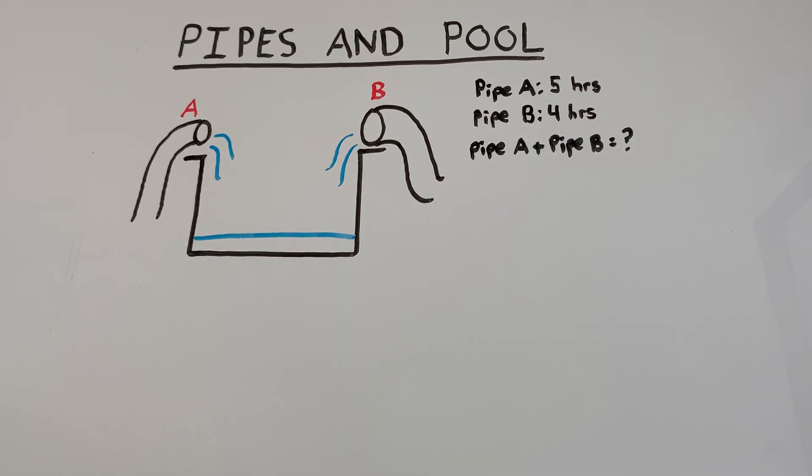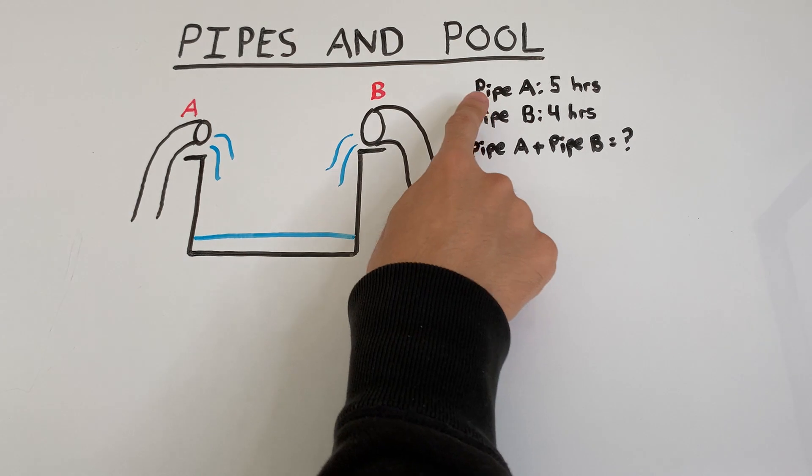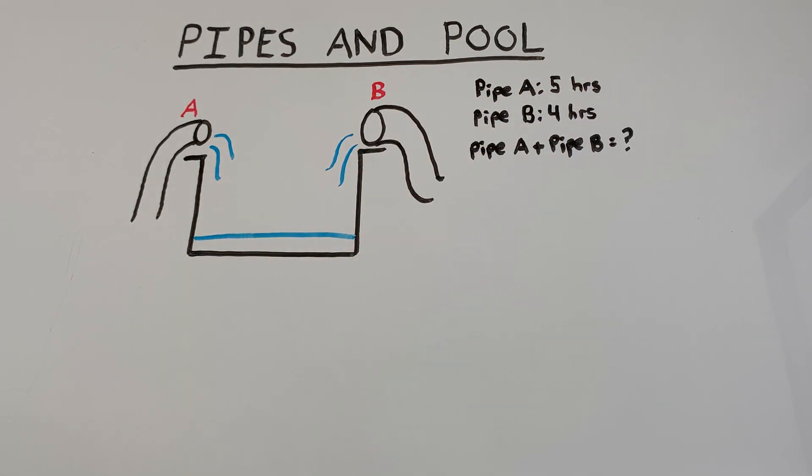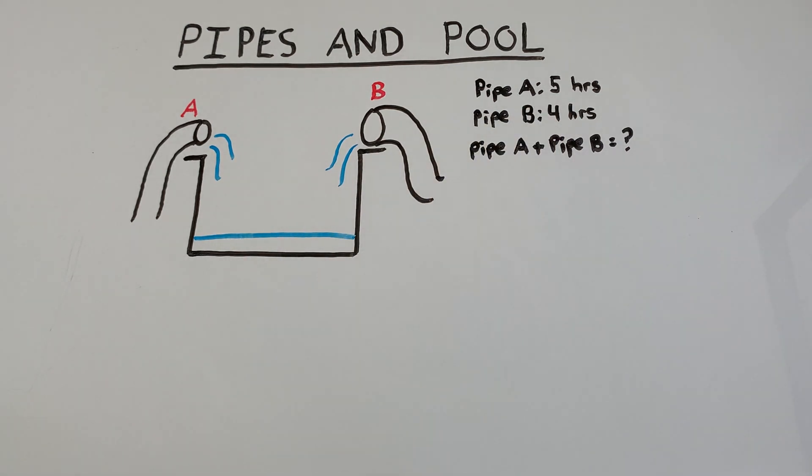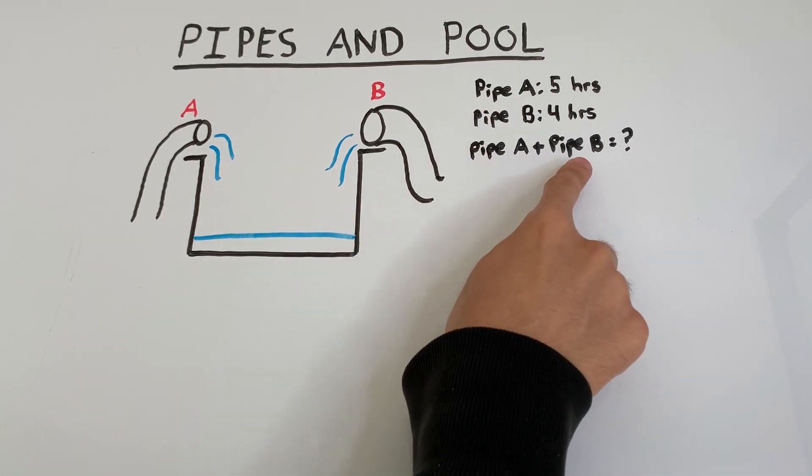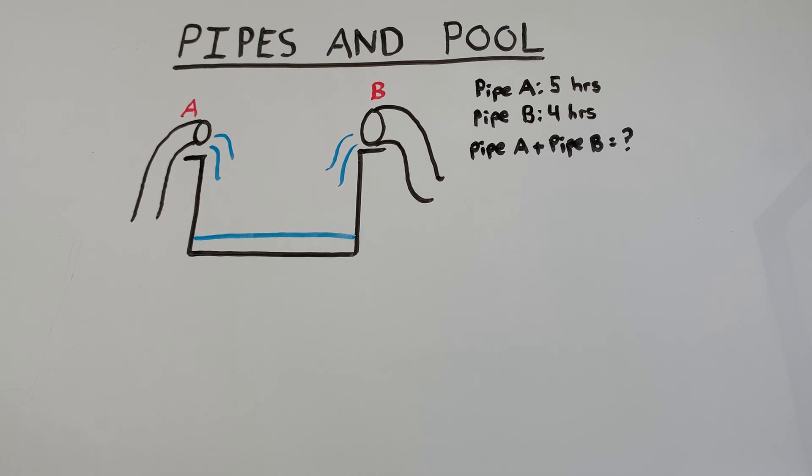Alright, so we have a problem involving two pipes and a pool. We're given that pipe A takes five hours to fill the pool on its own, and pipe B takes four hours to fill the pool on its own. We want to find out how long it will take to fill up the pool if both pipe A and pipe B are working together.